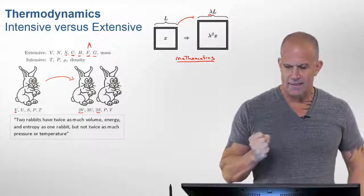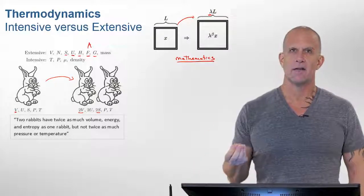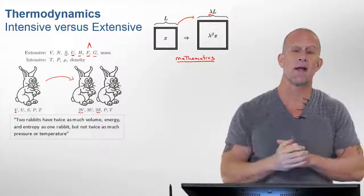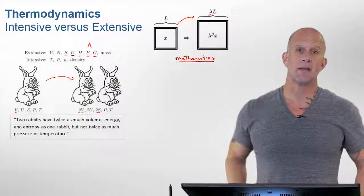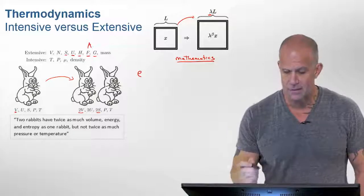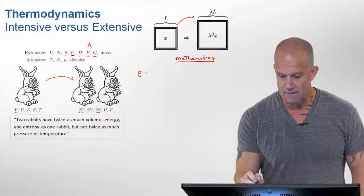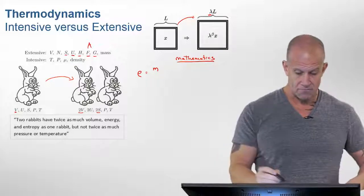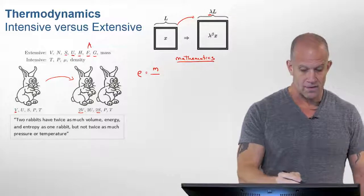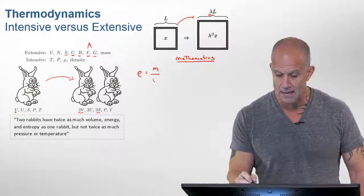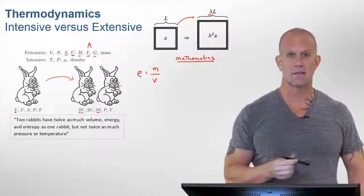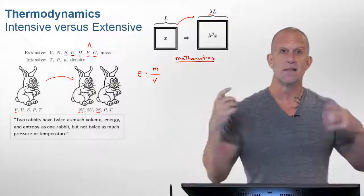And it's really when we get to density that we see another important property here, which is oftentimes if we take two extensive parameters and divide one by the other, we get an intensive parameter. So what is the density of the system, which we often represent rho? It's mass, which is extensive. If we double the number, we've doubled the mass over the volume. When you divide one extensive by the other, you get an intensive parameter, the density.